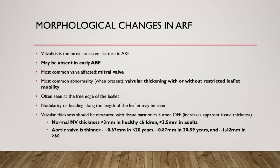What constitutes a thick leaflet? We should measure with tissue harmonics turned off to avoid overestimating apparent tissue thickness. Normal mitral valve thickness should be corrected for age. Per ASE recommendations, in healthy children the normal mitral valve thickness is less than 3 mm, and in adults less than 3.5 mm is considered normal. For the aortic valve, which is thinner, normal thickness is 0.67 mm in those under 20 years, approximately 0.87 mm in the 20–60 age range, and 0.42 mm in those above 60.